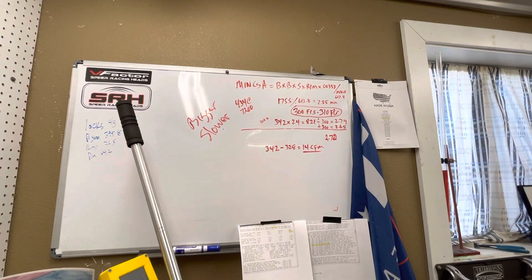So let's go over here to this, let me show you this. On this sheet, it shows at 0.800 lift needs 328 CFM to make 765.